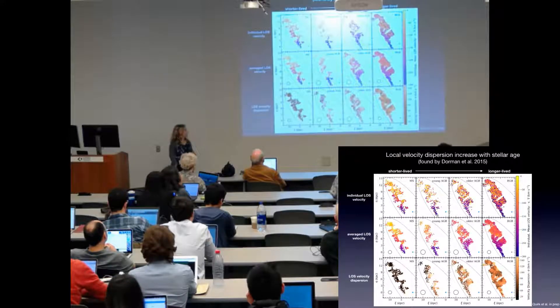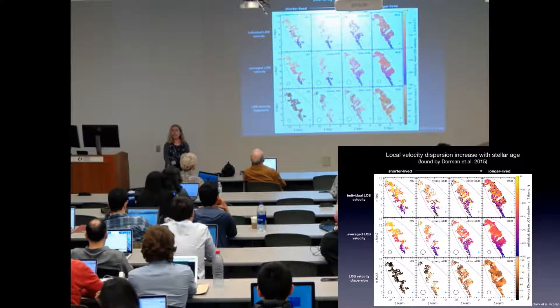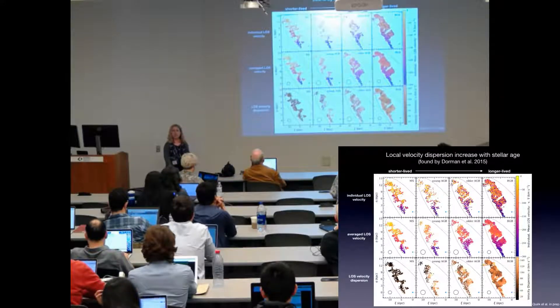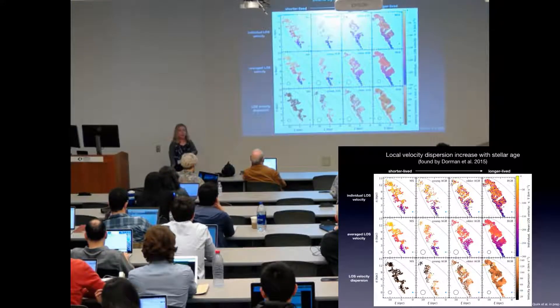The bottom panels show the local velocity dispersion. And as you can see, as you go from shorter-lived to longer-lived, velocity dispersion increases. This is something that was found by Claire Dorman in 2015.